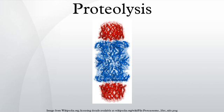Different enzymes have different specificity for their substrate. Trypsin, for example, cleaves the peptide bond after a positively charged residue. Chymotrypsin cleaves the bond after an aromatic residue. Elastase cleaves the bond after a small non-polar residue such as alanine or glycine.